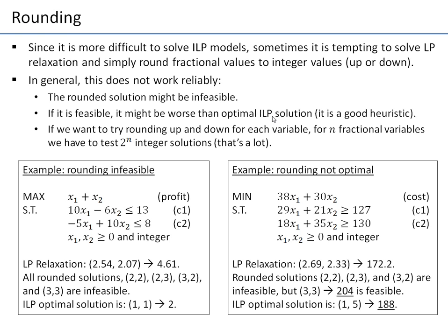Even if it is feasible, the solution might be worse than the optimal integer solution. By rounding, you may get a feasible solution, but don't think it is optimal — it is not guaranteed to be optimal. Notice this is a good heuristic; you may get a pretty decent feasible solution in some cases.